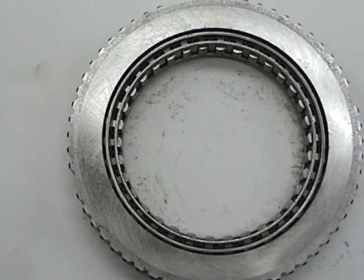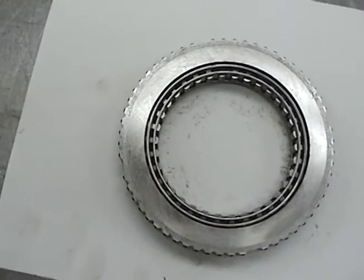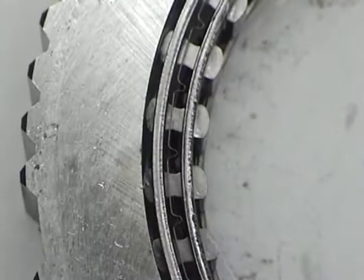Once the inner race is removed, it is much easier to see the sprag rotation and its action.